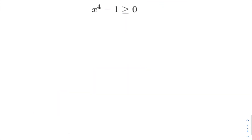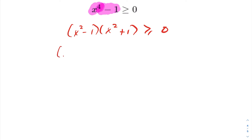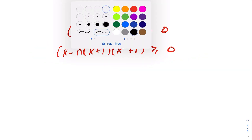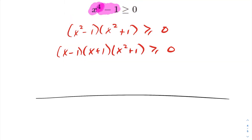Let's take a look at another example. Here they have not factored the polynomial for us yet, so we have to do some factoring. We notice a difference of squares, so we write this as (x² − 1)(x² + 1). We can apply difference of squares a second time on the first term, giving us (x − 1)(x + 1)(x² + 1). Notice that x² + 1 does not have any real roots — it has only complex roots, so we can't find any real values that make it equal to 0.